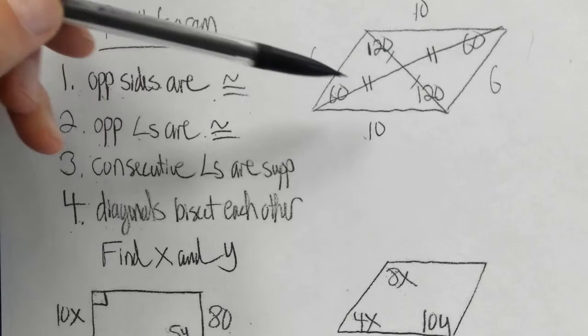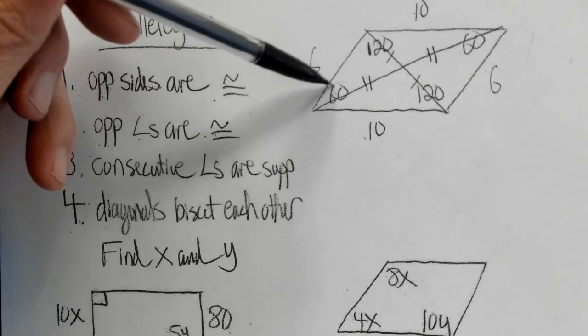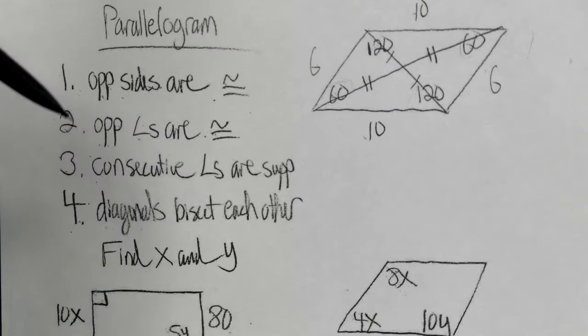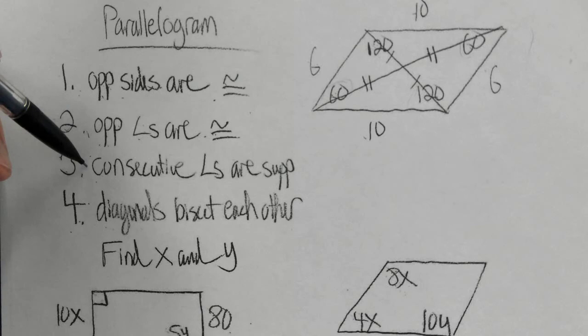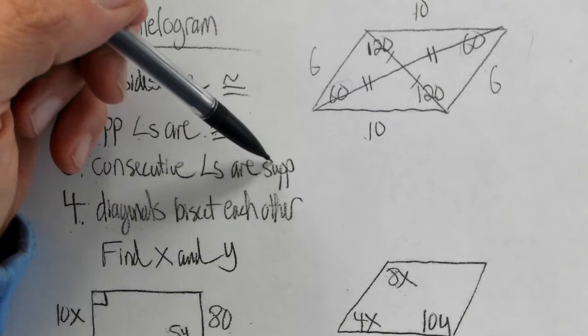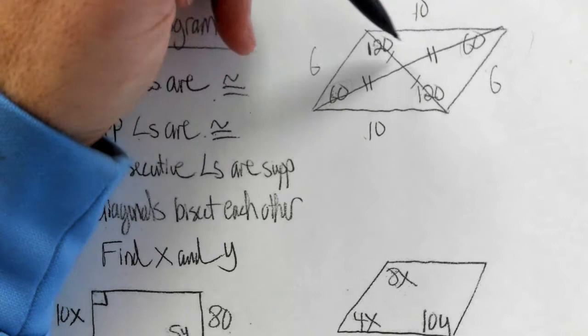Second property: opposite angles are congruent. So if one angle is 60 degrees, the opposite one is also 60 degrees; if one is 120, the opposite is 120. Third property: consecutive angles are supplementary. Opposite means across, but consecutive means next to each other. Consecutive angles have to be supplementary — they add up to 180. So 60 plus 120 adds up to 180; any pair of consecutive angles must be supplementary.